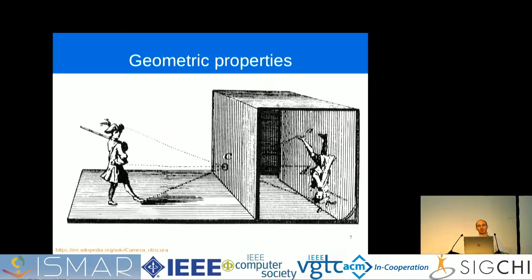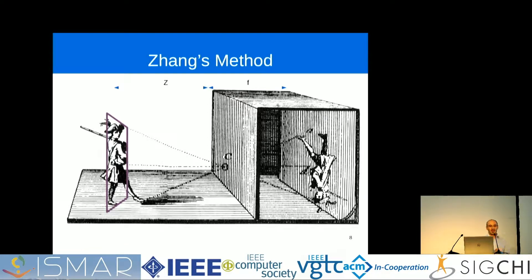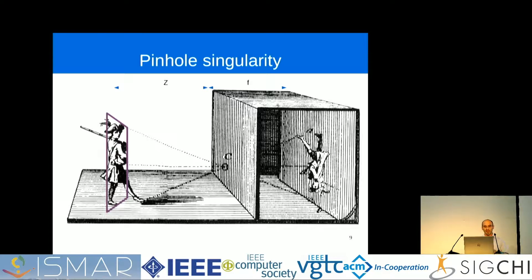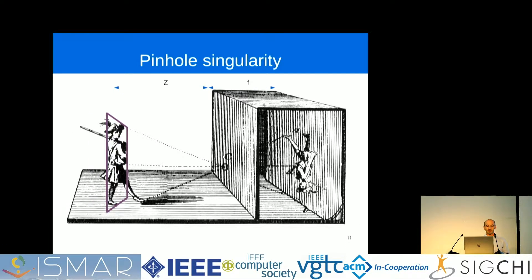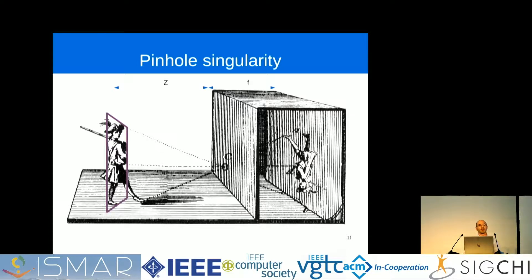Think of the pinhole camera model we use, and let's turn it into a calibration problem. We assume a planar calibration target. Zhang's method tries to simultaneously estimate the intrinsic properties, simplified here by the focal length f, and the pattern pose, simplified to the distance z. Assume the pattern is parallel to the image plane. If we observe a slightly smaller image, there are two equally probable explanations: the pattern is further away, or the focal length is a little bit shorter. Which one is selected is basically random or depends on image noise, because this is an ambiguity — a so-called singularity — in the camera model, and we want to avoid this.